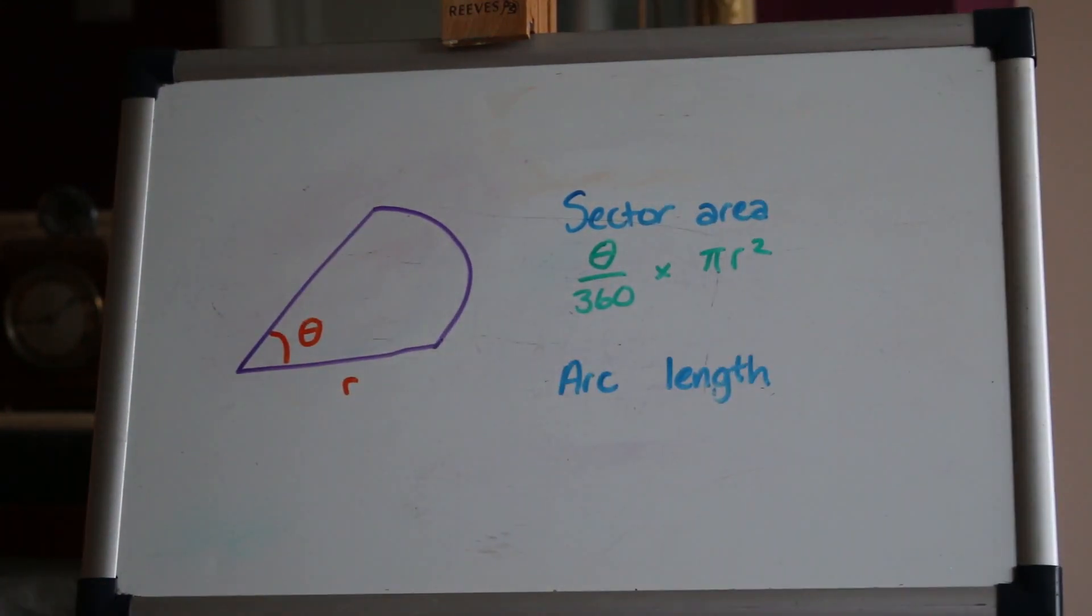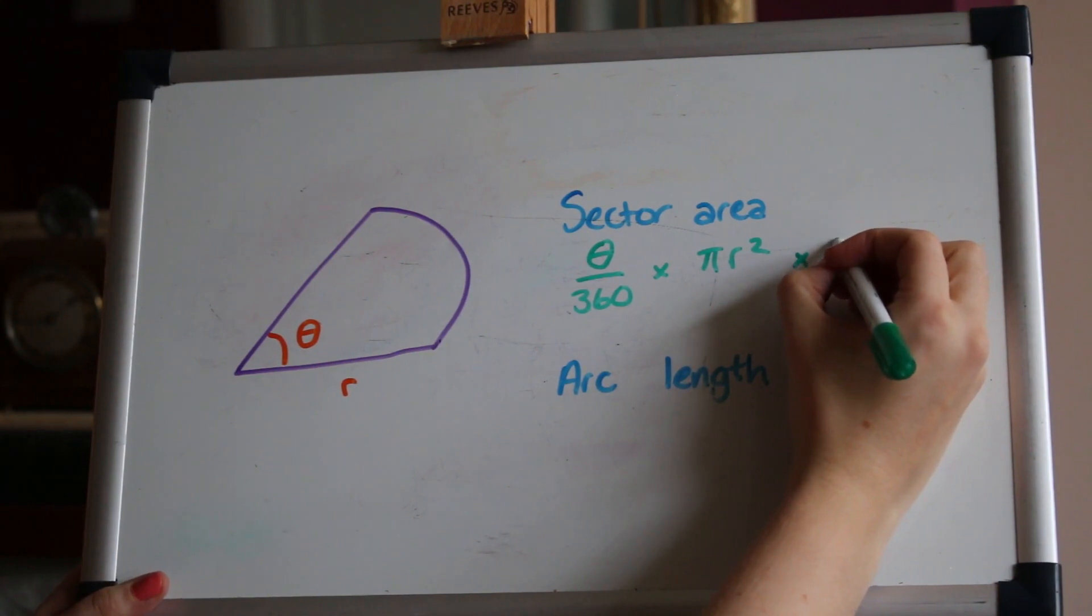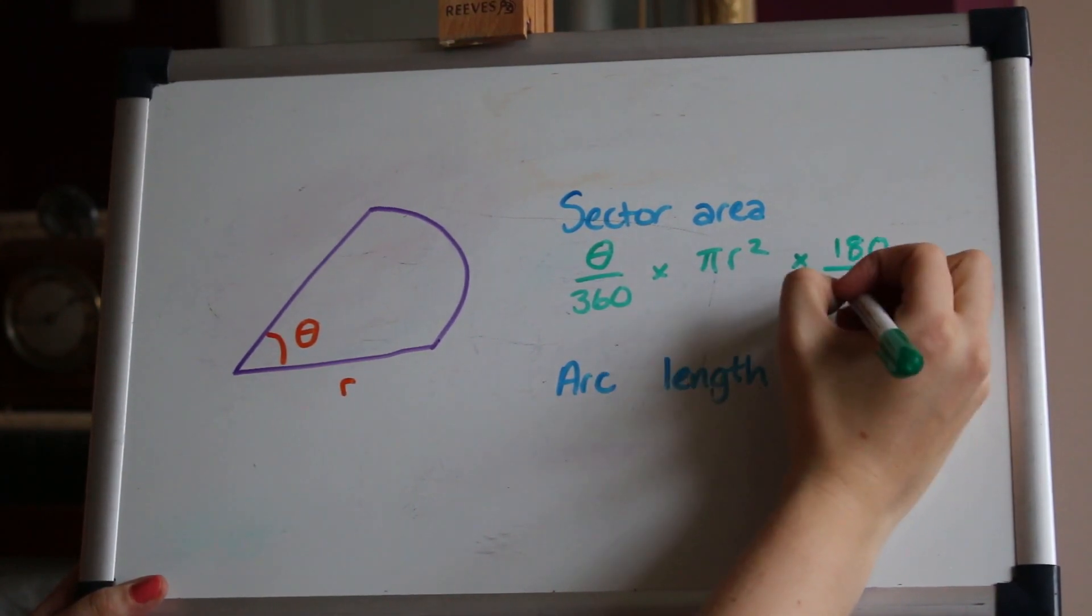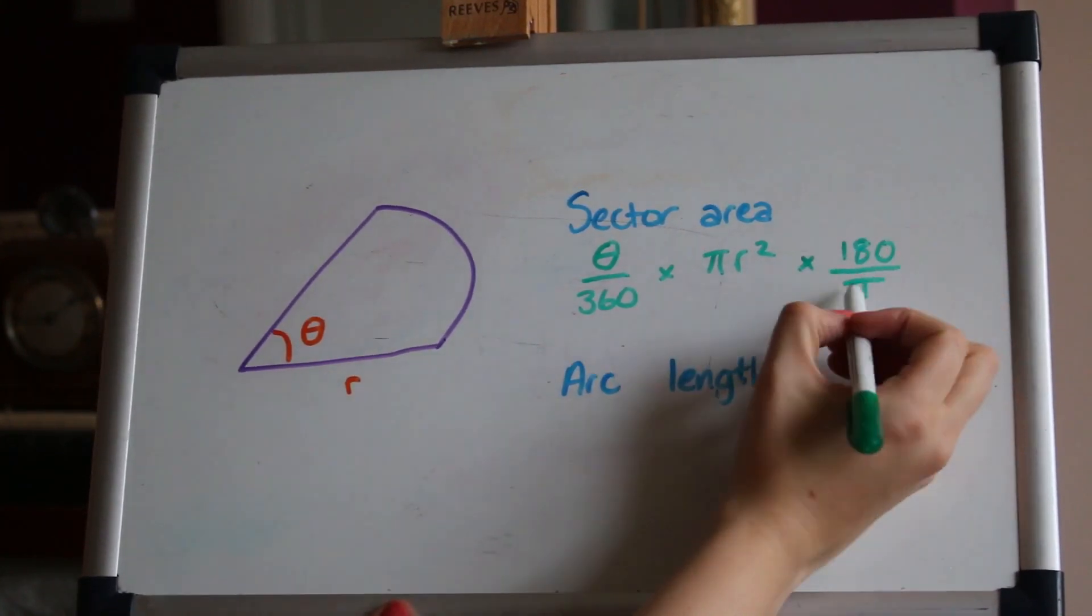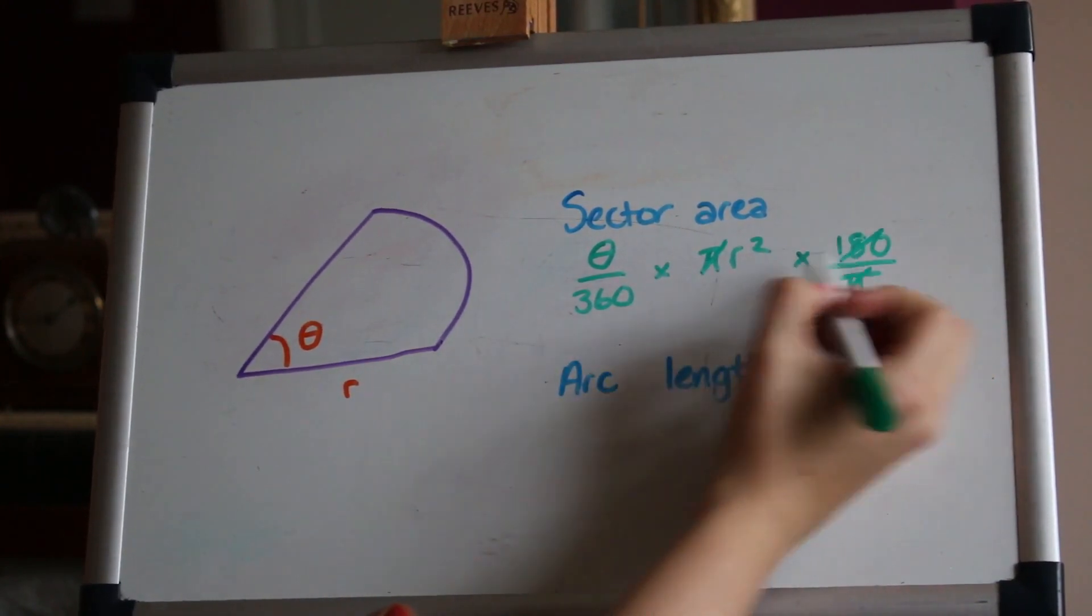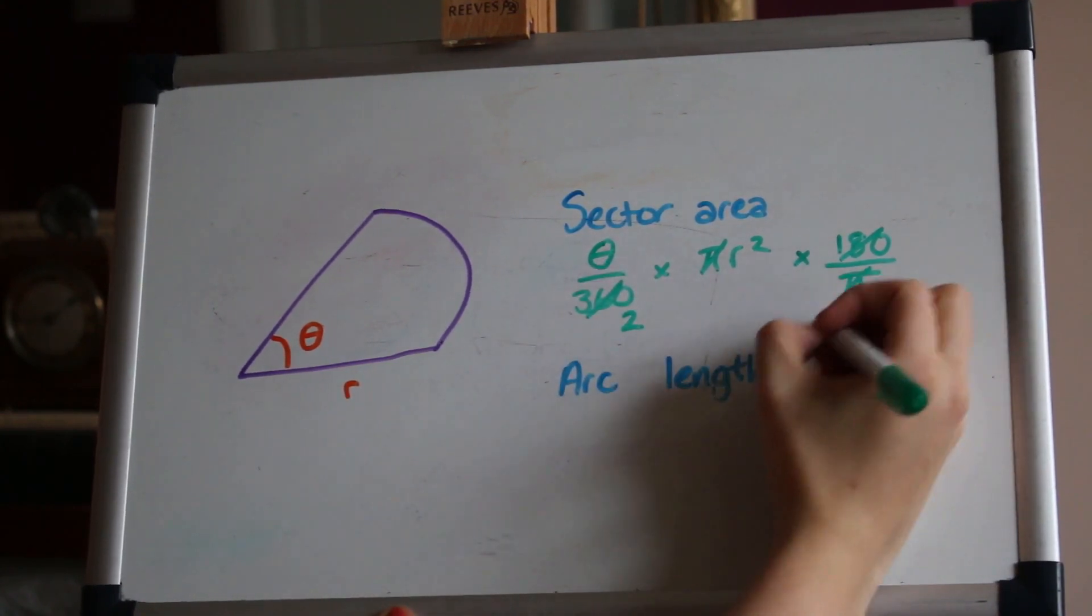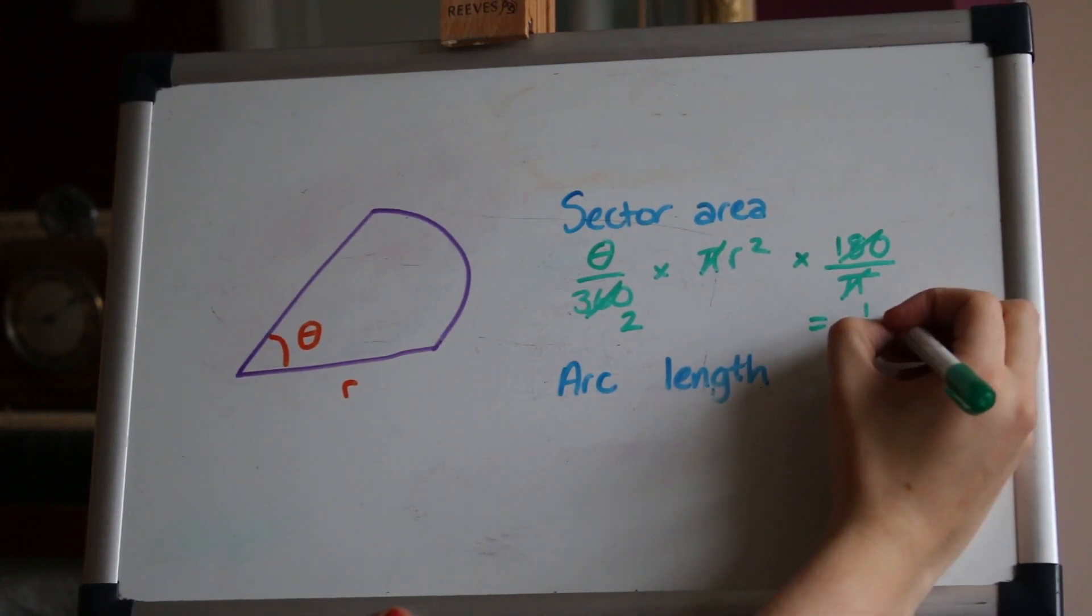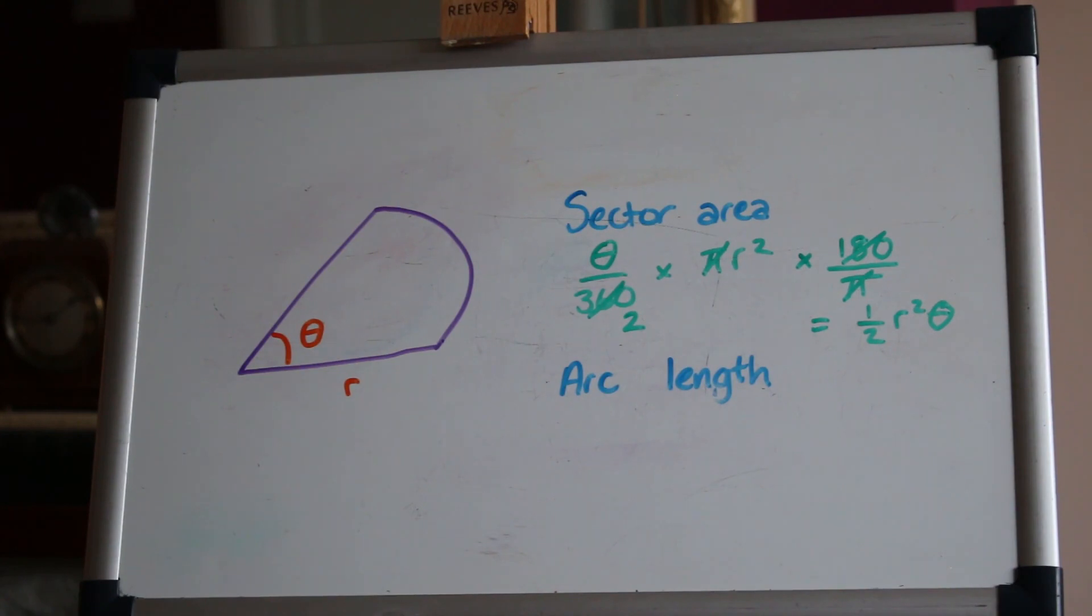If of course we've got radians instead of degrees, then to use this formula to convert to degrees we would have to multiply our radians by the scale factor that I showed you before which we'll say is 180 over π, the simplest scale factor. So this formula then cancels down—π and π cancel and 180 and 360 cancel to just give you half θr² or a half r²θ as it's more commonly seen. And that's a lot simpler and easier to remember I think than the old degrees version of the formula.